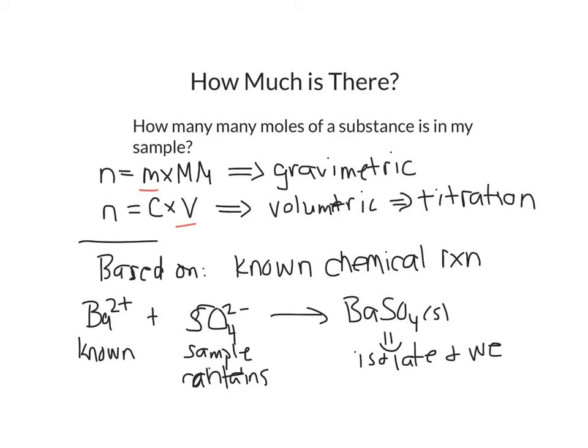And if I know the mass of barium sulfate, then I know its molar mass because I know what the compound is. So I can figure out the number of moles of barium sulfate. Every barium sulfate contains one sulfate, and so I've just back-calculated to the number of sulfates that were originally present in my sample.